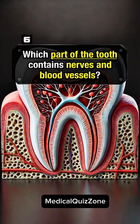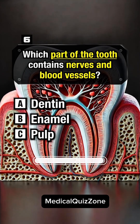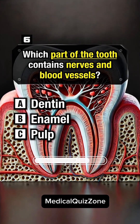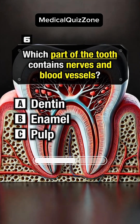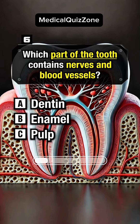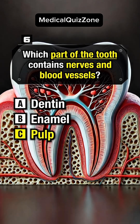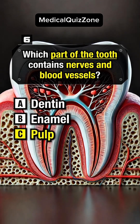Which part of the tooth contains nerves and blood vessels? Answer C: Pulp.